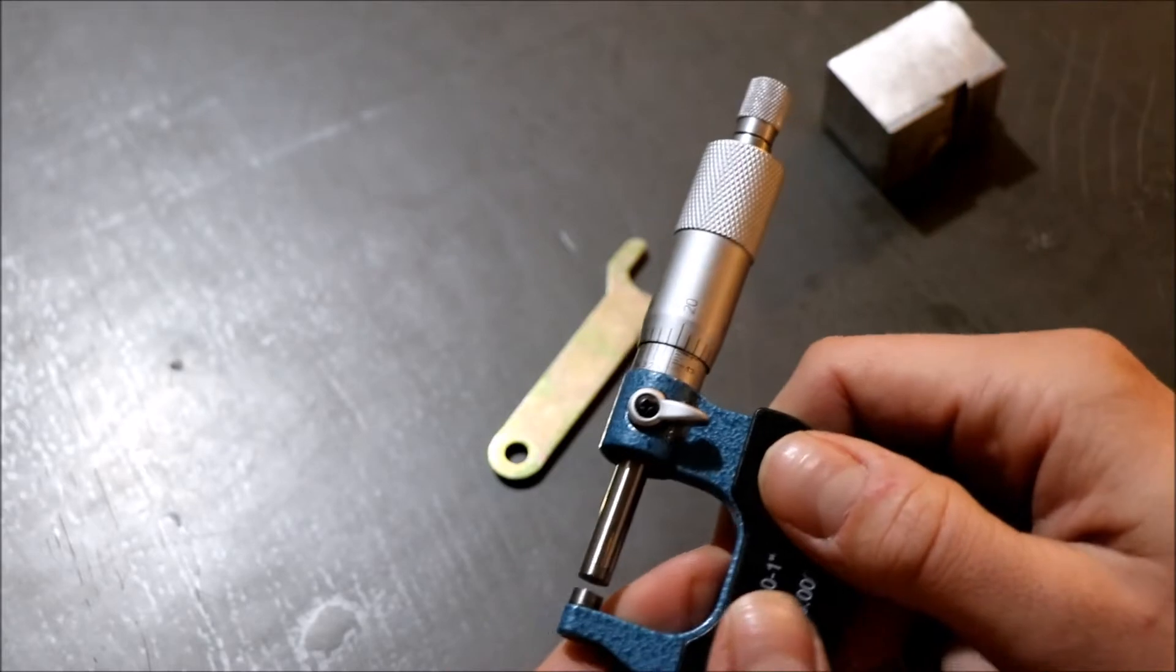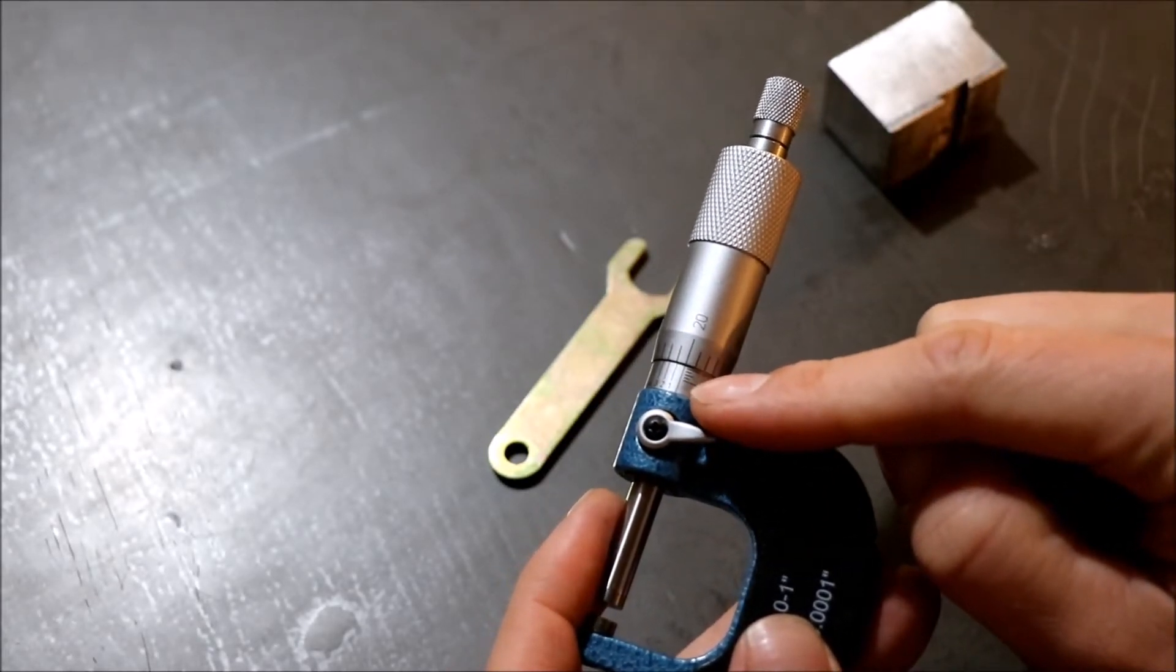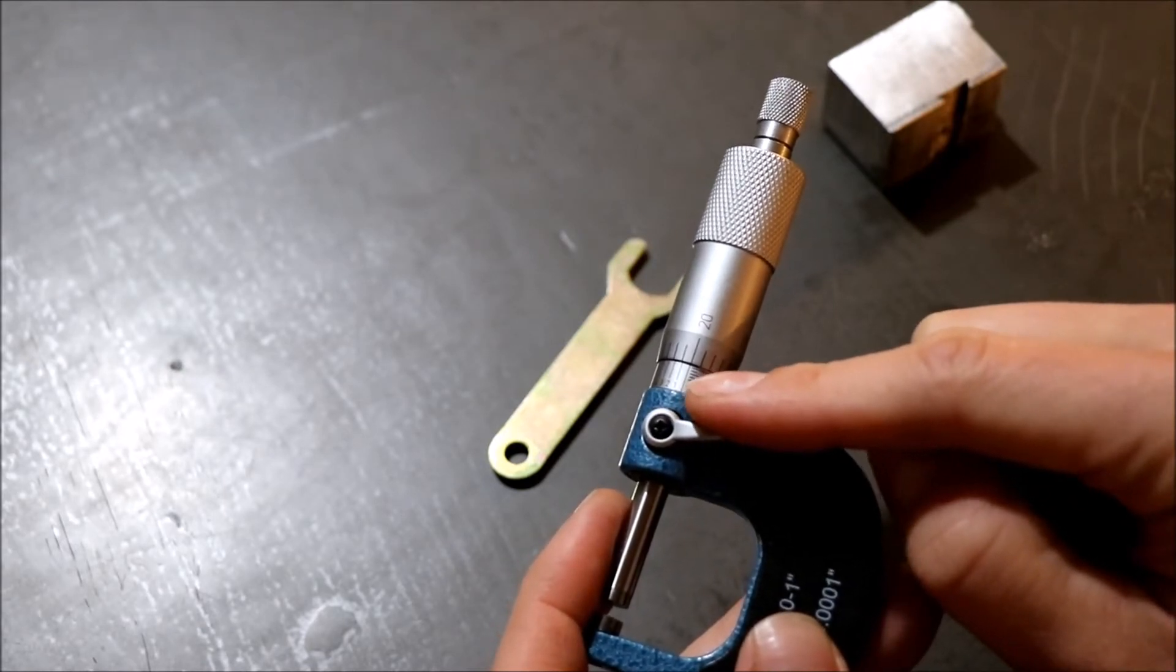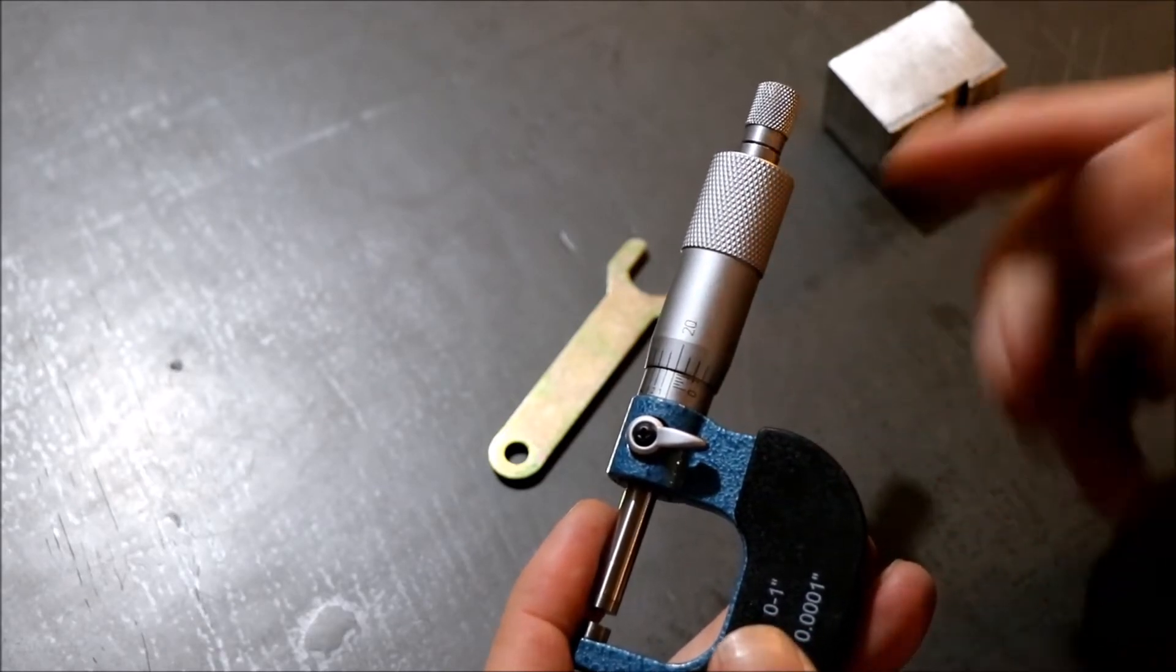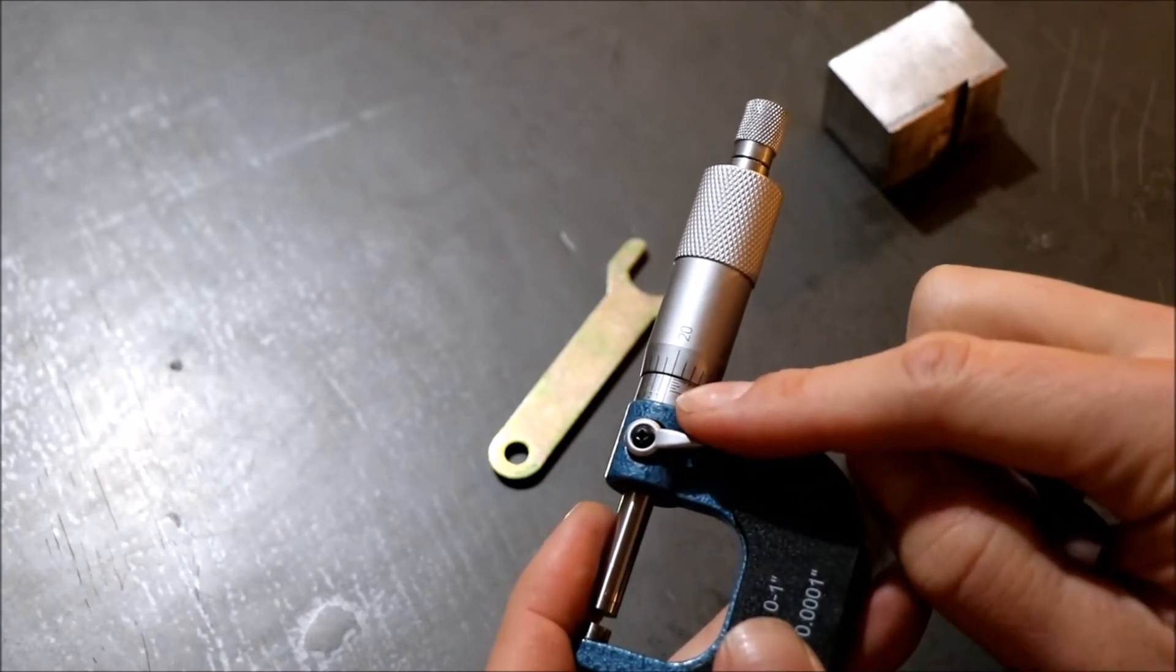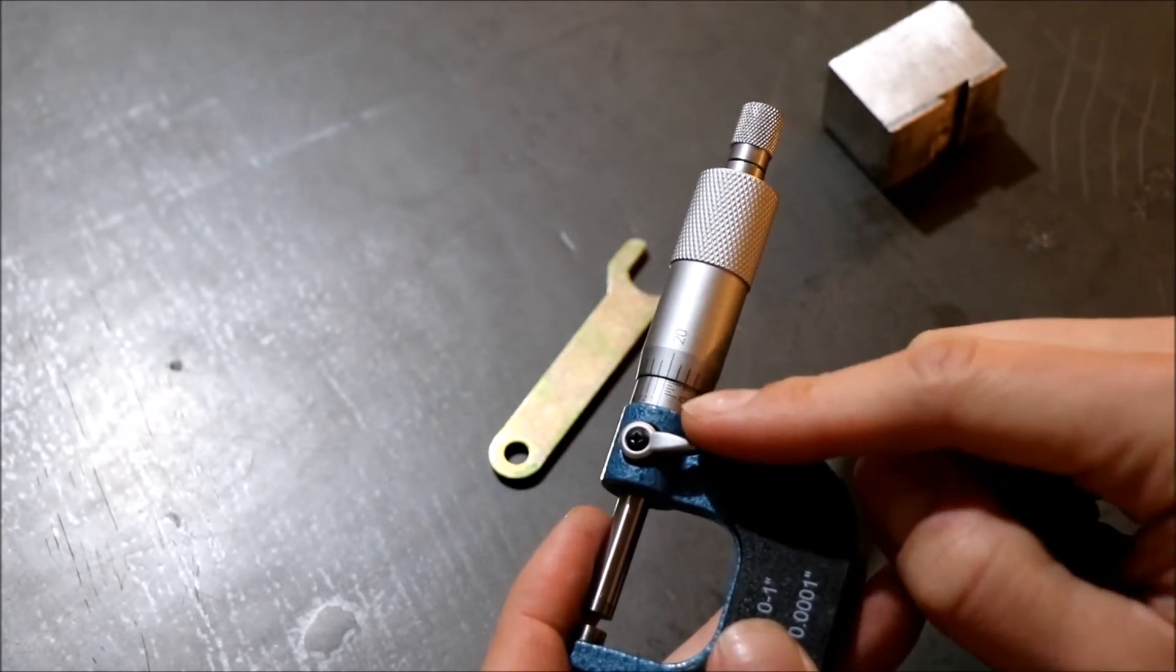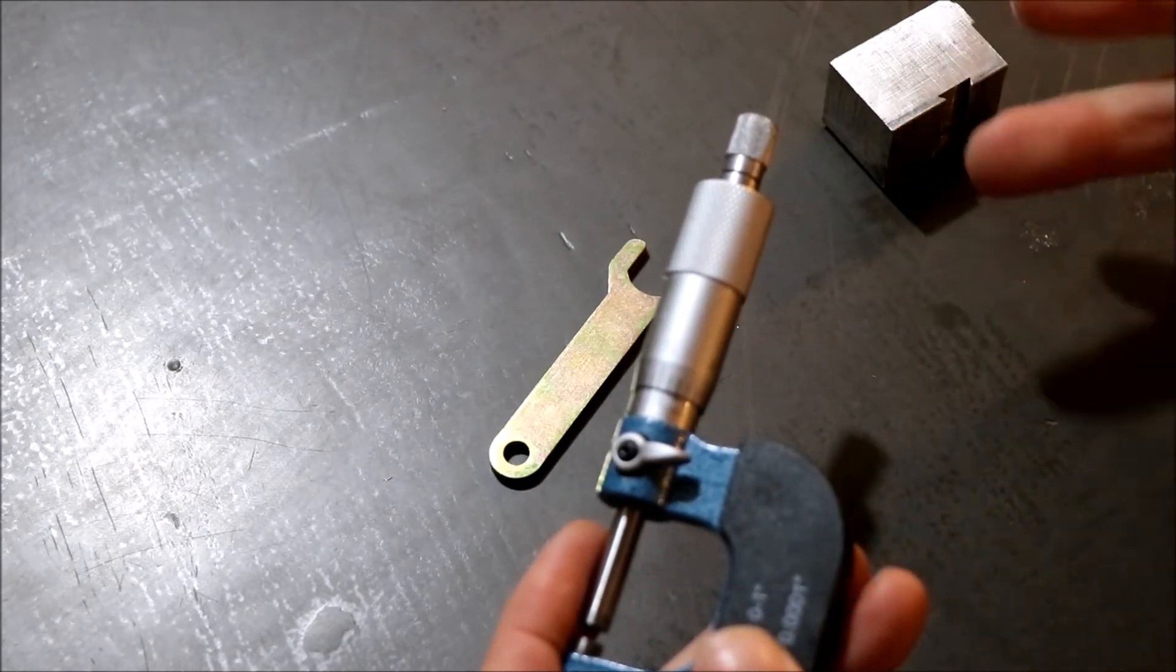And then when you're measuring this thing here what you're looking at is you're counting the little notch or little marks here. So in this particular micrometer and most standard micrometers each little mark equals 25 thousandths of an inch and every 100 thousandths of an inch is marked with in this case a 1 2 3 4 5.